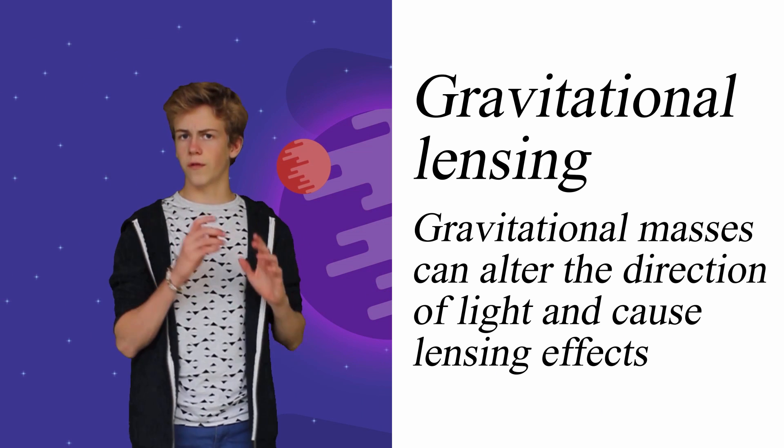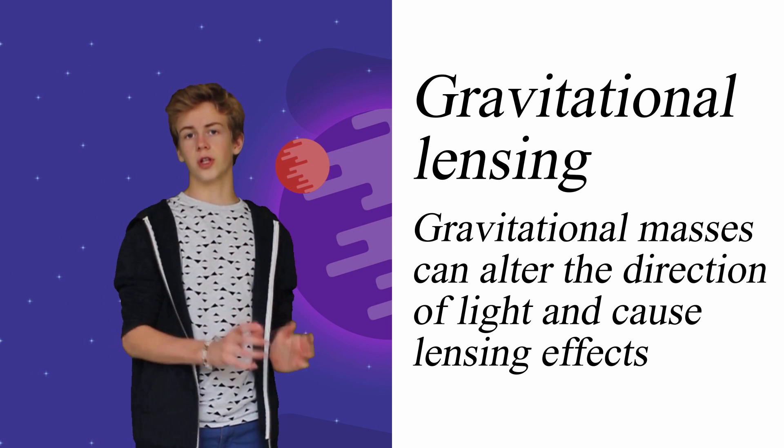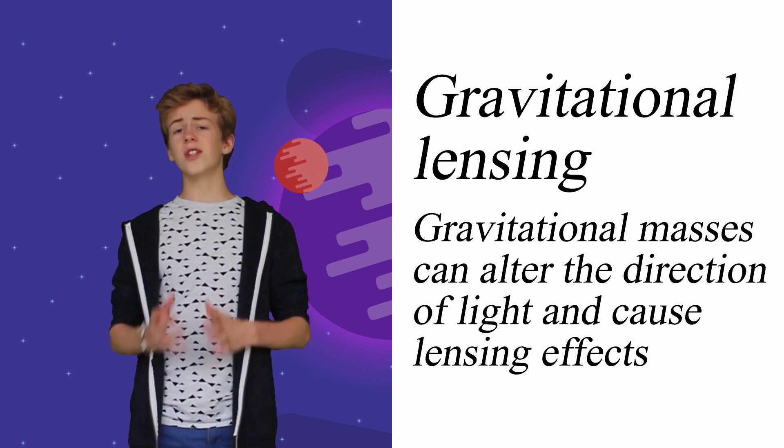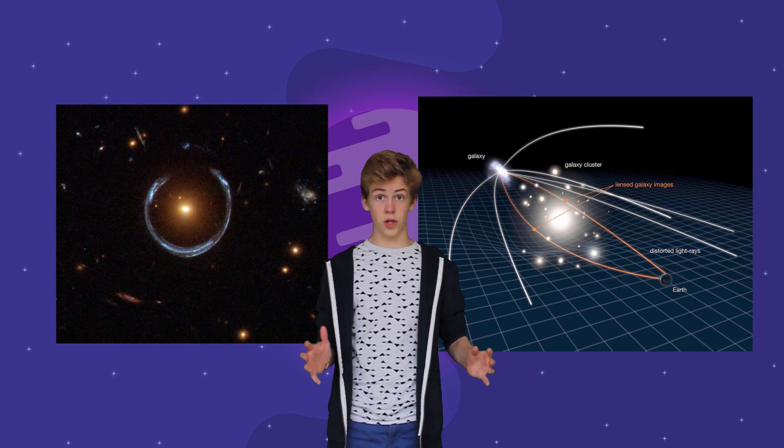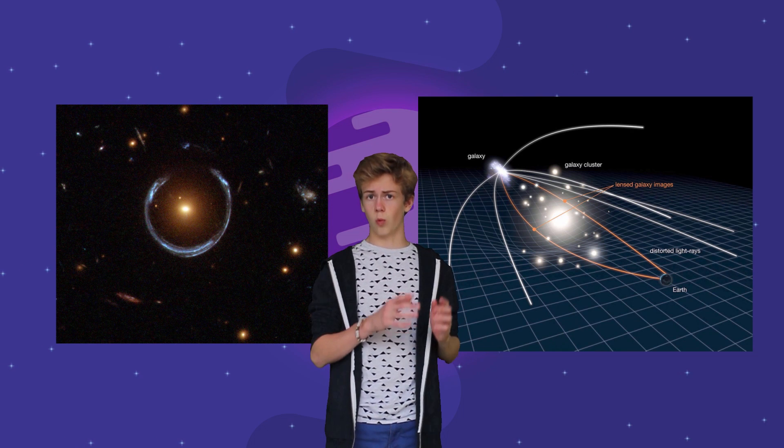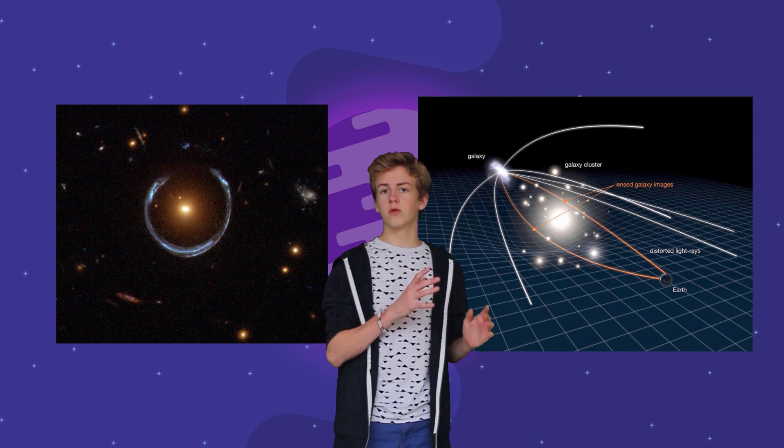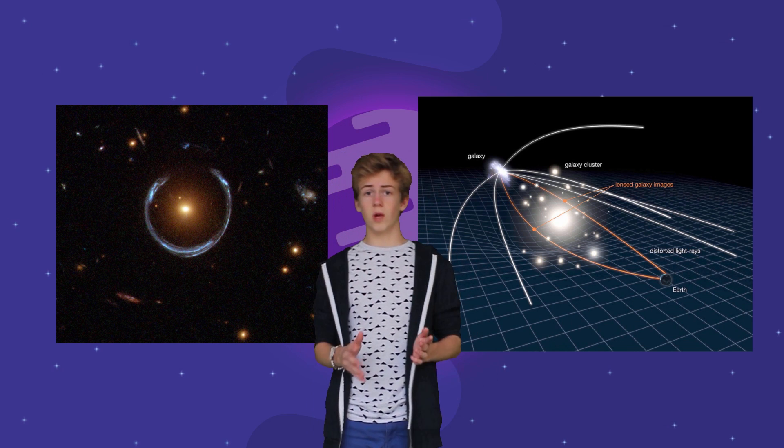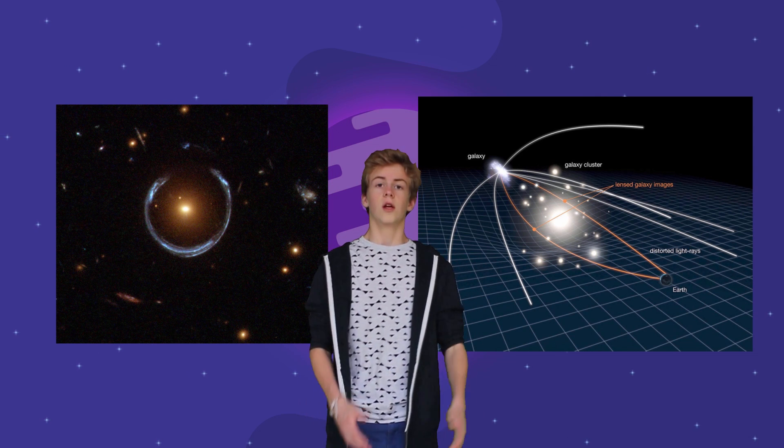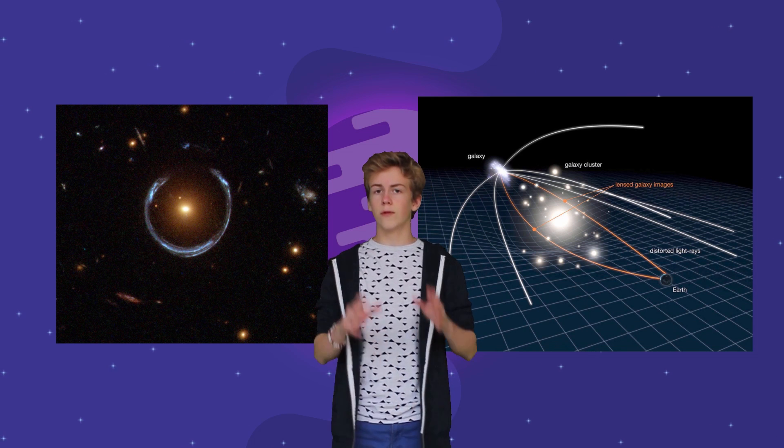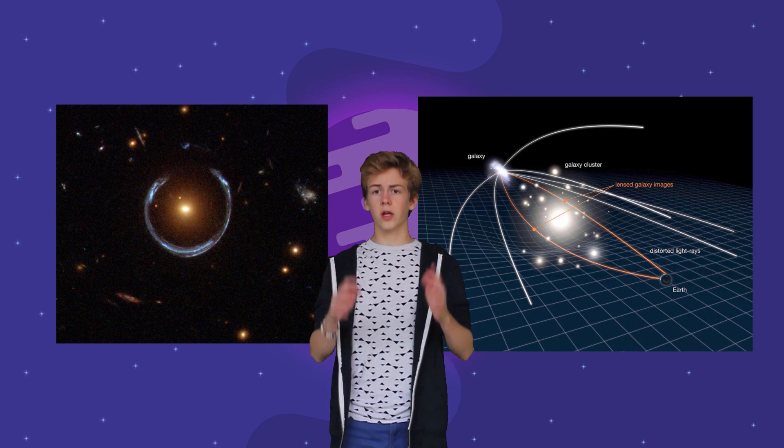Gravitational lensing means that gravitational masses can alter the direction of light. Imagine that you take a picture of a distant galaxy. Galaxies are large objects and the light rays leaving on one side of the galaxy will pass through a different part of space than the light rays leaving on the other side. The light rays will be bent in a different way and will form a distorted viewpoint for the camera. Gravitational lensing was the first successful test of general relativity and proved that space-time is not always flat.